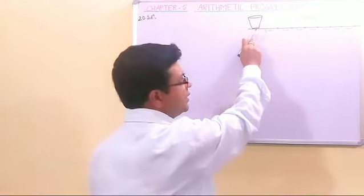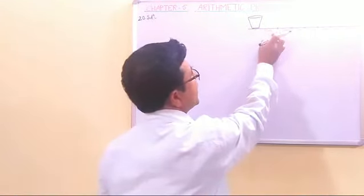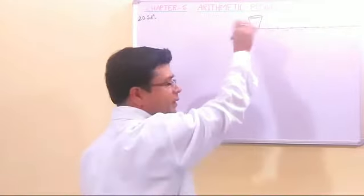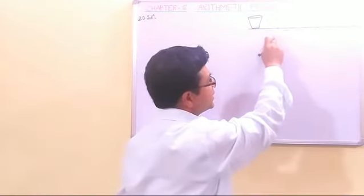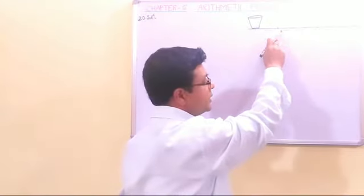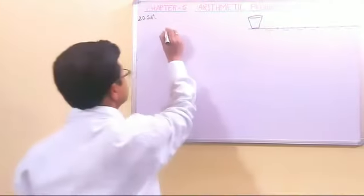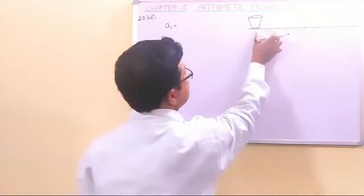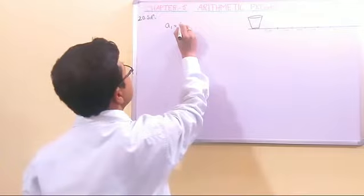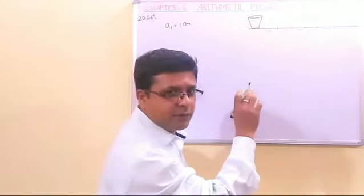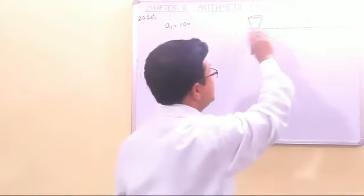She starts from here. The first potato is here. The distance she has to cover here is 5 meters. Again, she comes back to put the potato here. The competitor starts from here, runs up to the first potato, then brings it and puts it in the bucket. So the first distance, this is 5 meters, again comes 5 meters. So it is 5 plus 5, 10 meters.